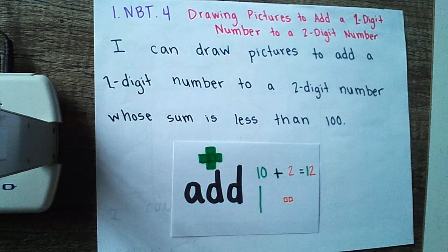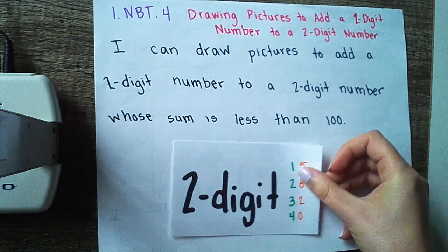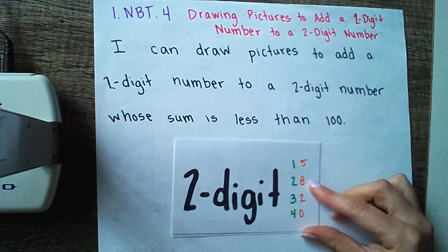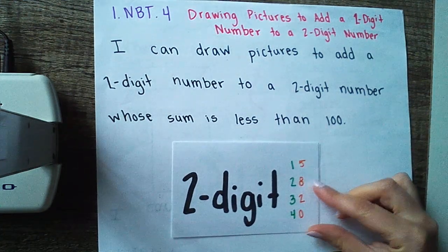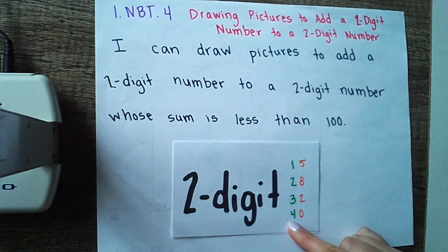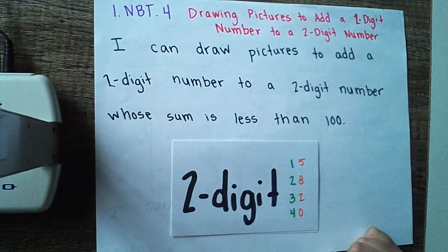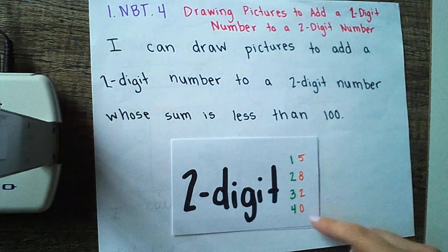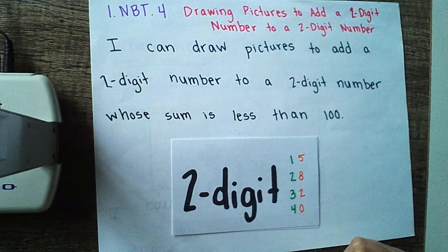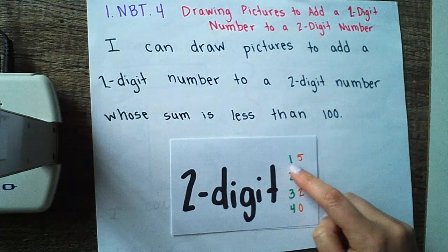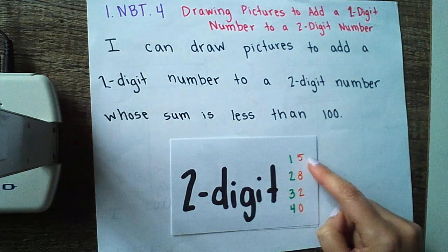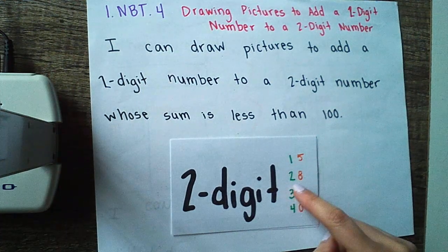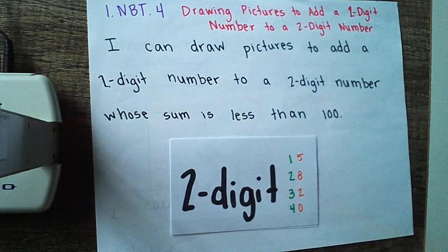Now you might be asking, well Miss Burns, what's a two digit number? Great question. Two digit numbers have both a tens place and a ones place. The first digit is telling us how many tens that number has. The second digit tells us how many ones. For example, the number 15 has one 10 and five ones. The number 28 has two tens and eight ones.